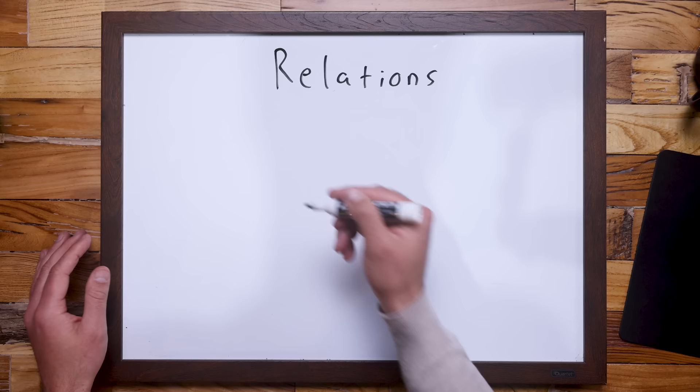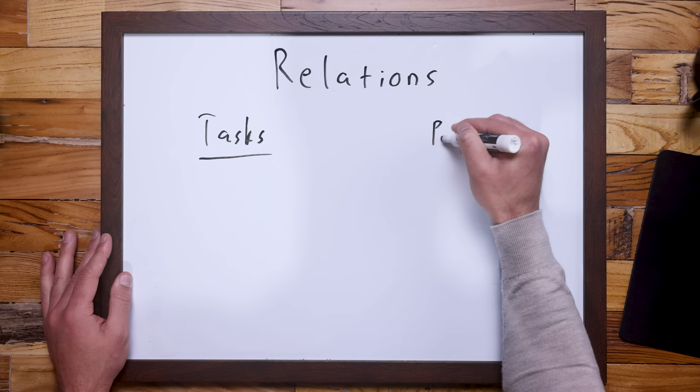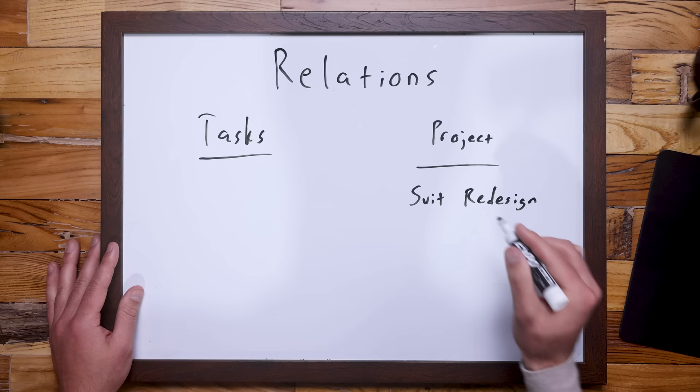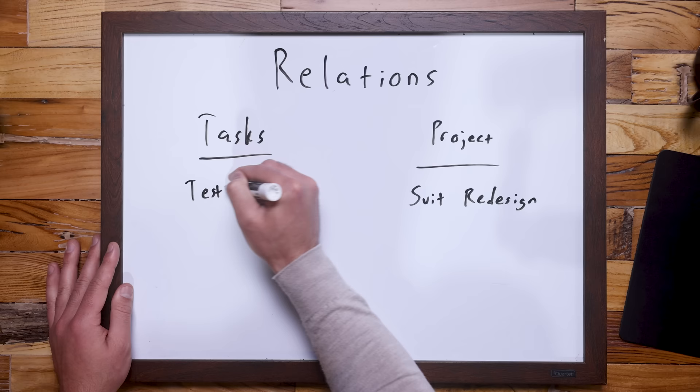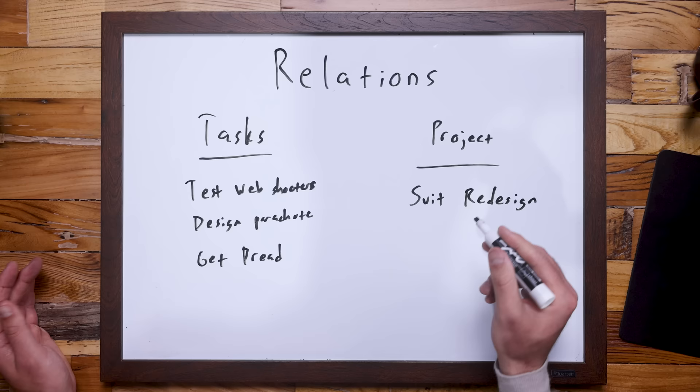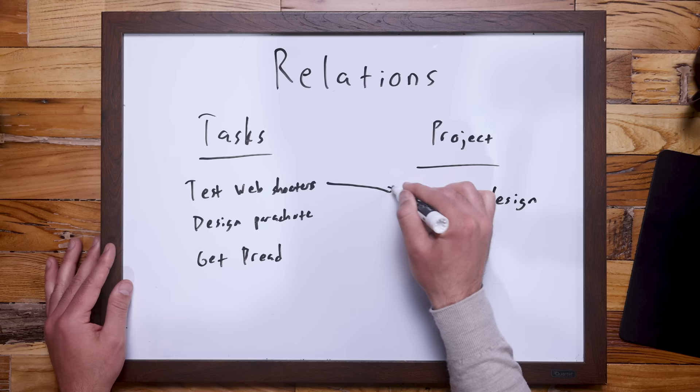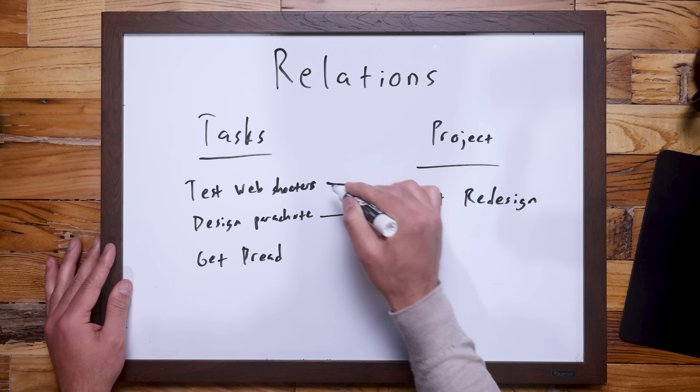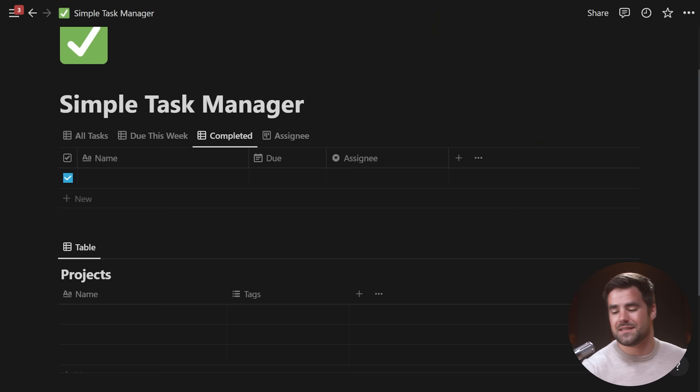For example, a tasks database and a projects database. If we have a database full of loose tasks, we may want to relate some of those to bigger projects. Maybe I have a project called 'Suit Redesign' for Spider-Man, and in my task database I have things like 'Testing Out the Web Shooters,' 'Designing the Spider Parachute,' and some unrelated tasks like 'Get Bread.' A relation allows us to relate these rows to one another — I can add my Suit Redesign project to those tasks, and within Suit Redesign I'll see which tasks are related. We can then use filter and sorting criteria to see contextual data.